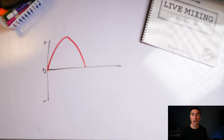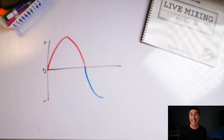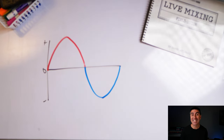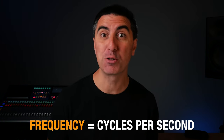Then the object swings in the other direction, creating negative air pressure. Eventually it reaches the end of its travel and returns to the zero point. Now we've completed one cycle, or one wave. How quickly this wave repeats is called its frequency — otherwise known as cycles per second — and we abbreviate that with the term hertz, or Hz.